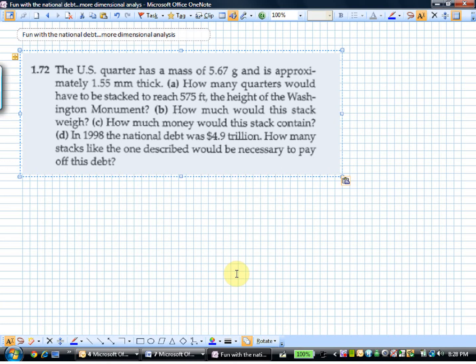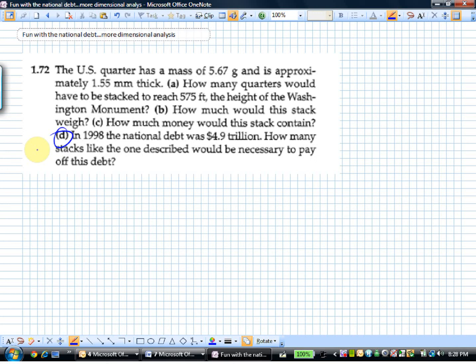I'm going to challenge us to take a look at part D here. This problem is a little dated, an old Zumdahl problem from an earlier edition. It says in 1998 the national debt was 4.9 trillion. As of 2011, pretty close to now, I think we're pretty close to 14 trillion dollars.